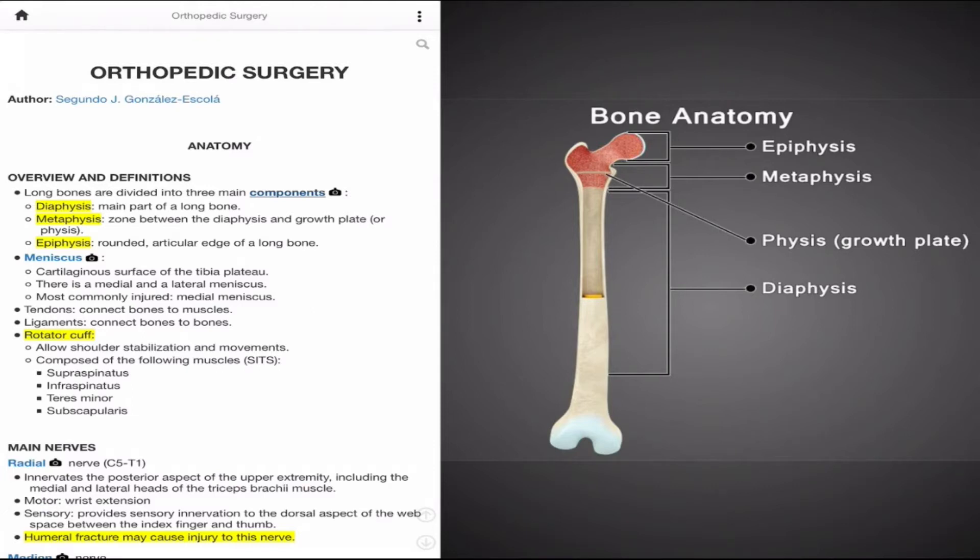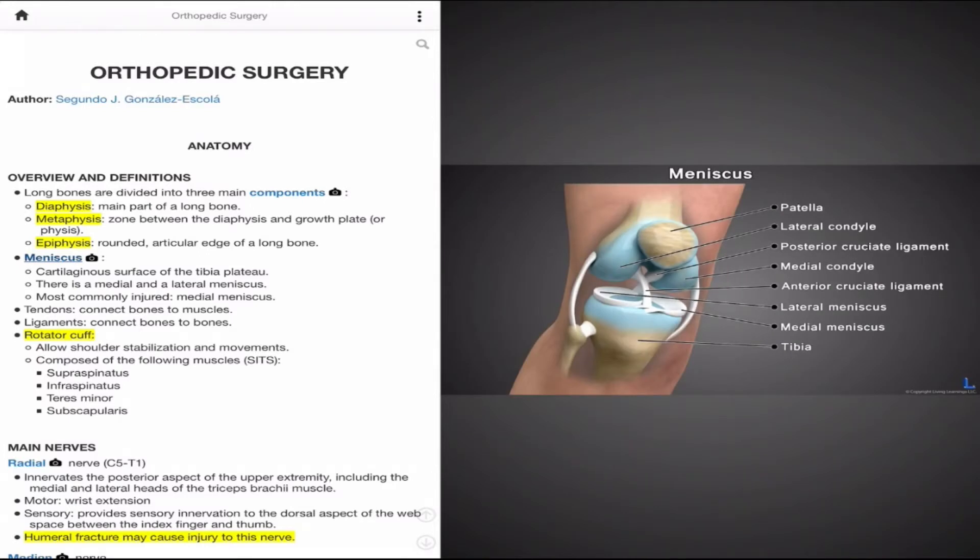Lastly, the epiphysis is the articular edge of the long bone, which typically holds a rounded surface. Let's move along and discuss an important cartilaginous structure within the knee, the meniscus.